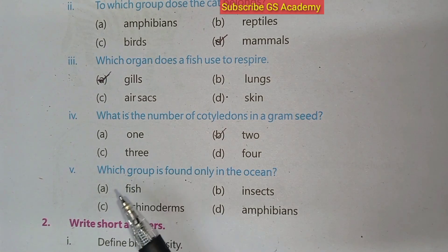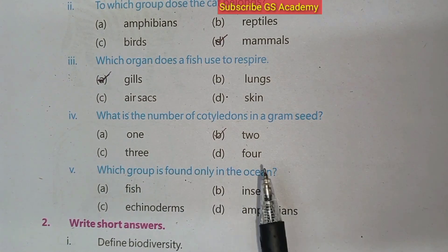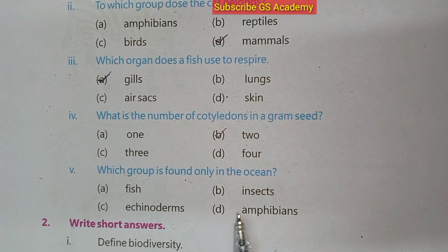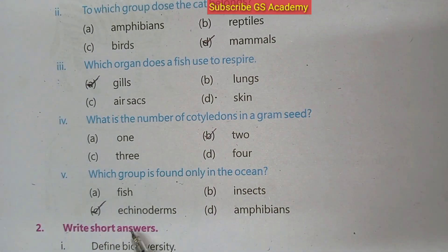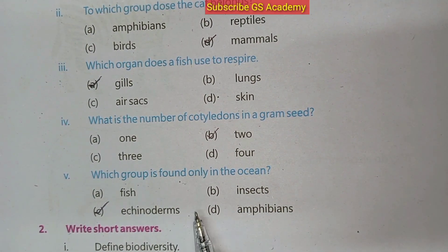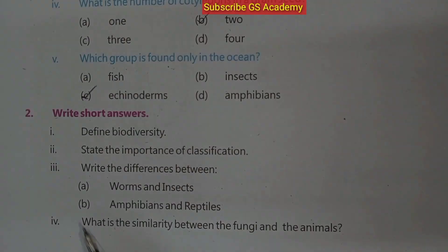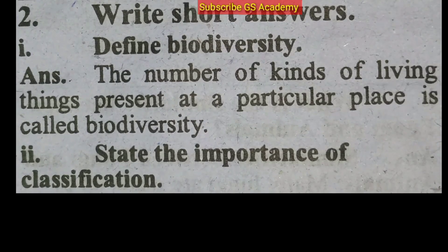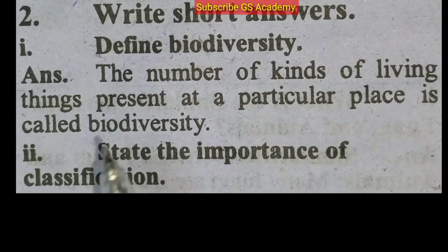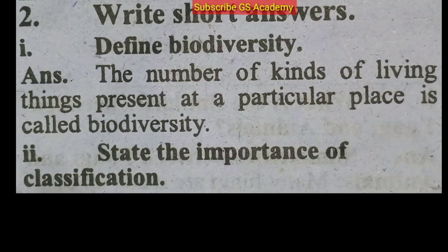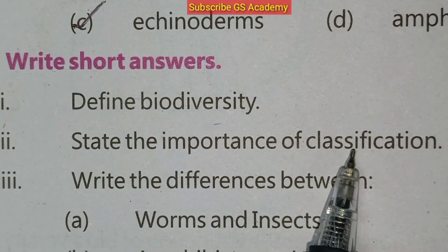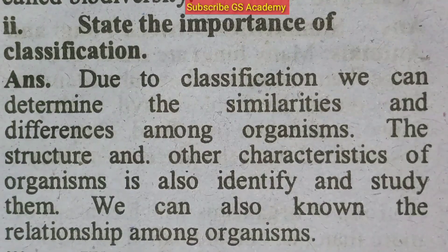Which group is found only in the ocean? Options are: A. Fish, B. Insects, C. Echinoderms, D. Amphibians. The correct answer is C, Echinoderms.